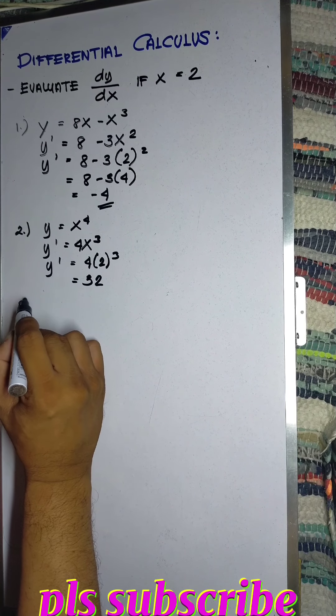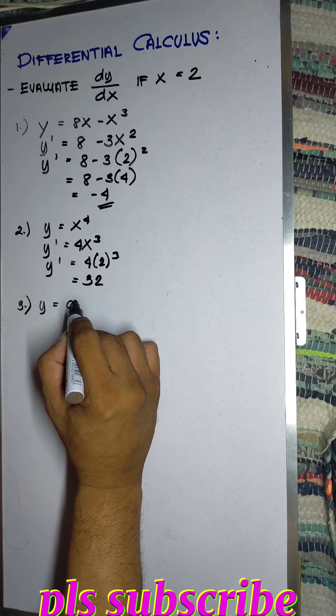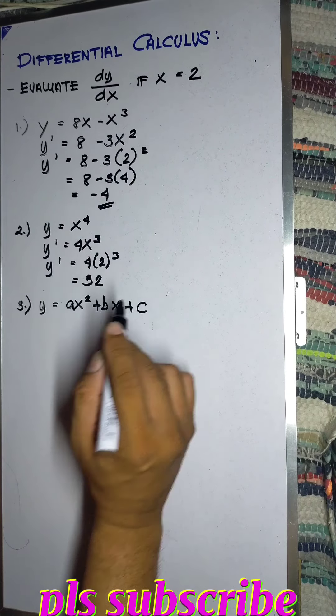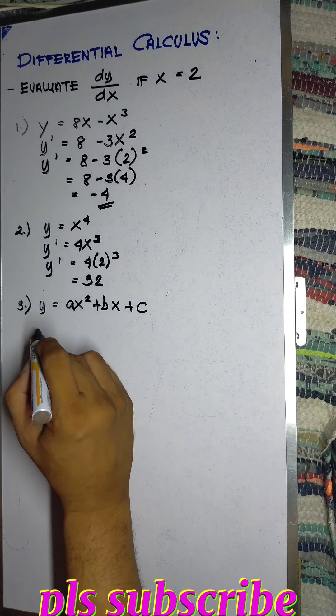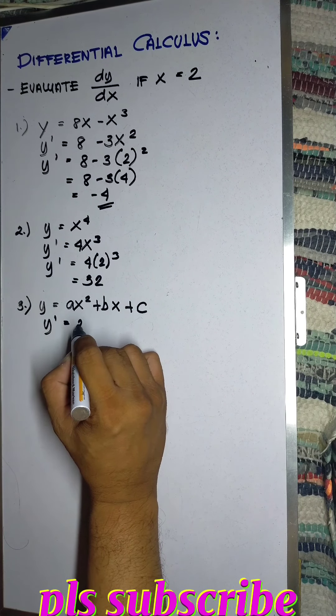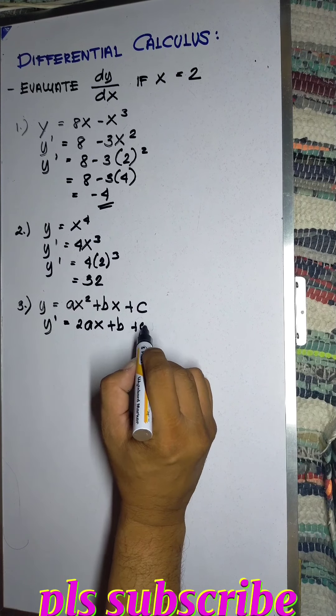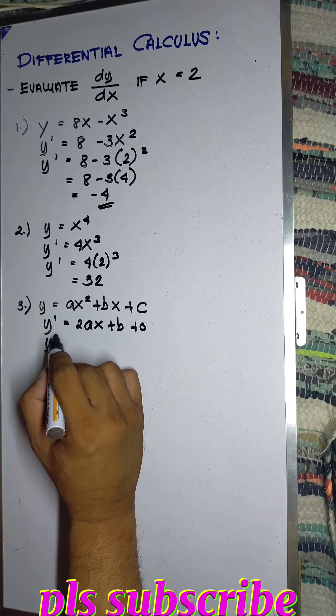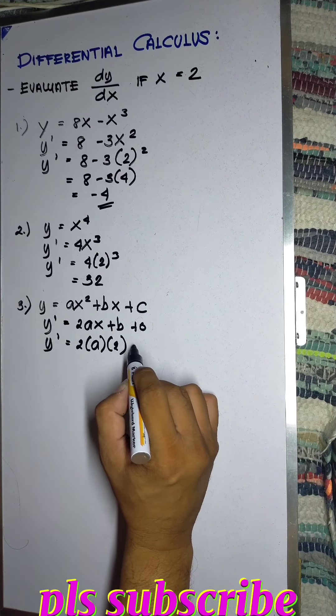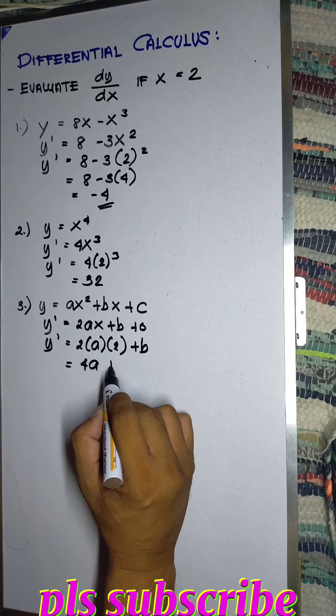Number 3, y equals ax squared plus bx plus c. So the derivative dy/dx equals 2ax plus b. The derivative of a constant is 0. Therefore, the derivative is 2a times 2 plus b, which equals 4a plus b.